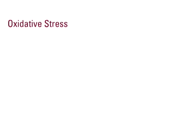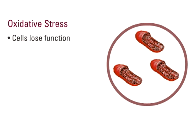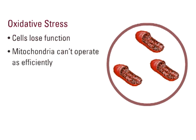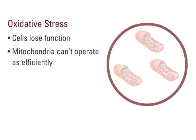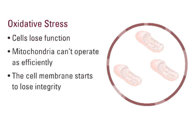As the results of oxidative stress accumulate, the cells start to lose function. In this example, mitochondria, or the engine of the cell, can't operate as efficiently, and the cell membrane starts to lose integrity and fall apart.